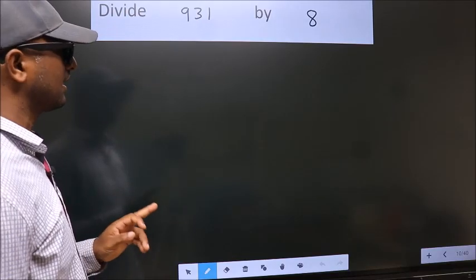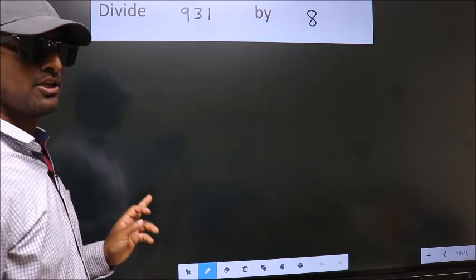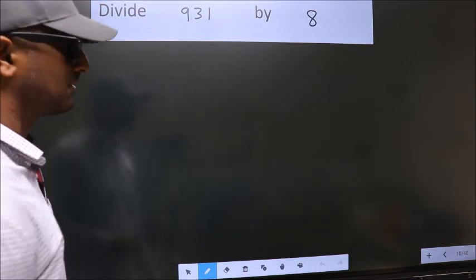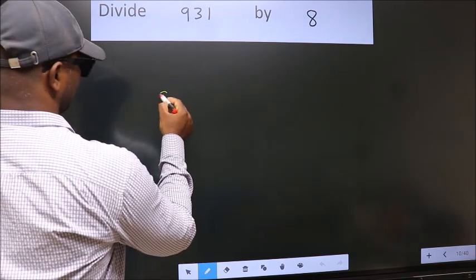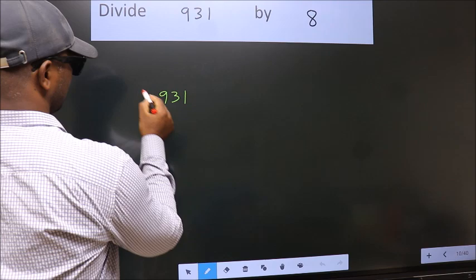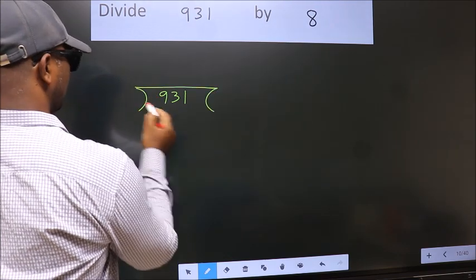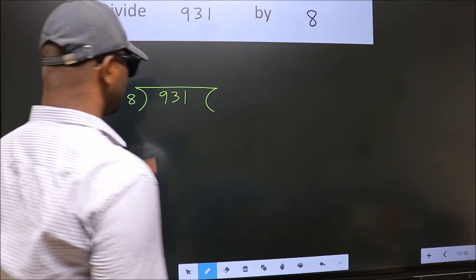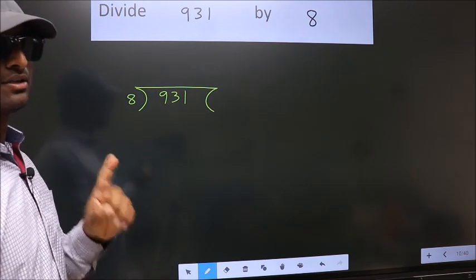Divide 931 by 8. To do this division, we should frame it in this way. 931 here, 8 here. This is your step 1.